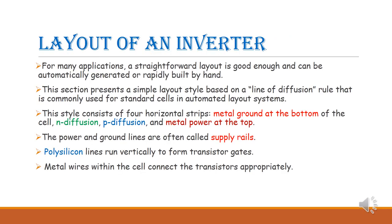Next, we look at the layout of an inverter using the line-of-diffusion rule. This uses four horizontal strips: metal ground at the bottom, then N-diffusion, then P-diffusion, and metal power at the top. Power and ground lines are called supply rails. Polysilicon is used for constructing the transistor gates, and metal wires are used to connect the cells appropriately.